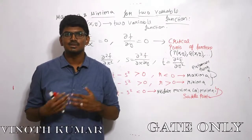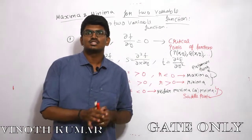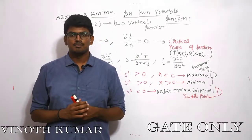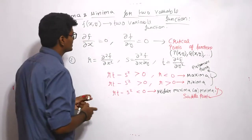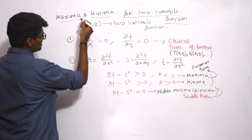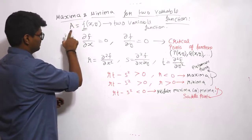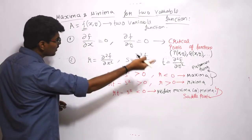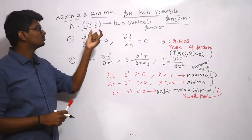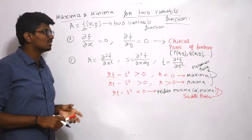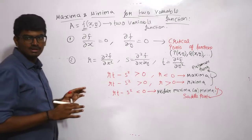The next topic is maxima and minima. We already discussed maxima and minima for a single variable function, but here we have a two-variable function. A two-variable function, like f(x, y), depends on two variables x and y. If it is a two-variable function, how do we find maxima and minima?